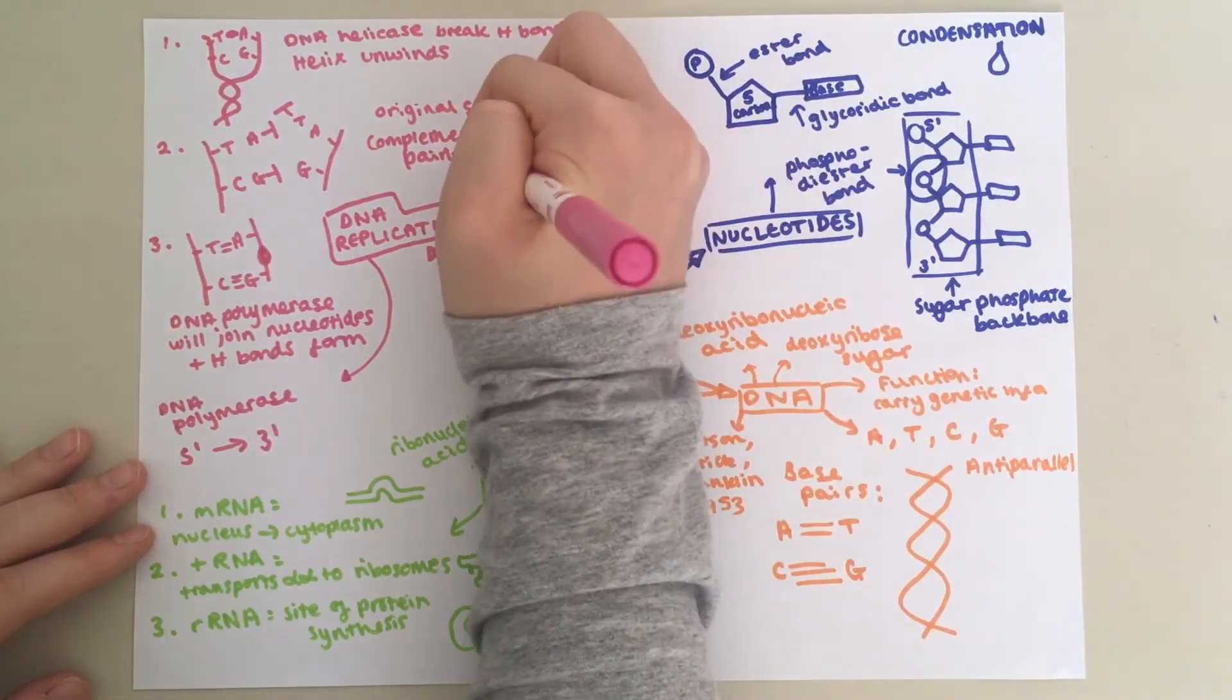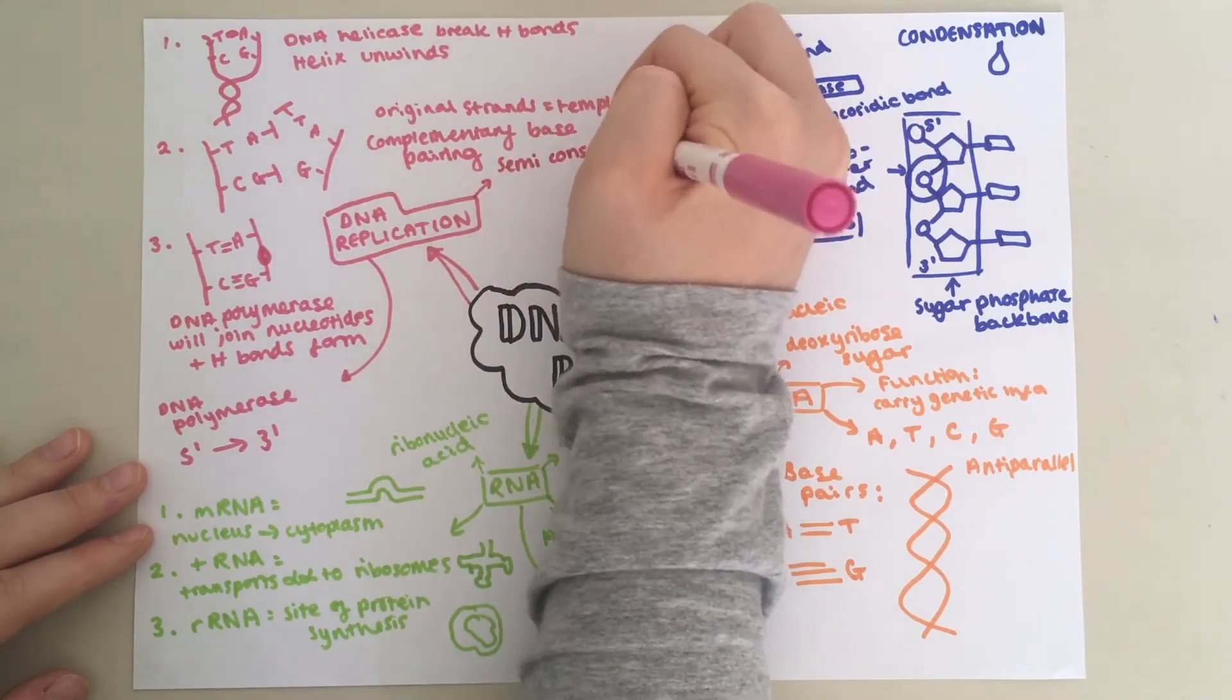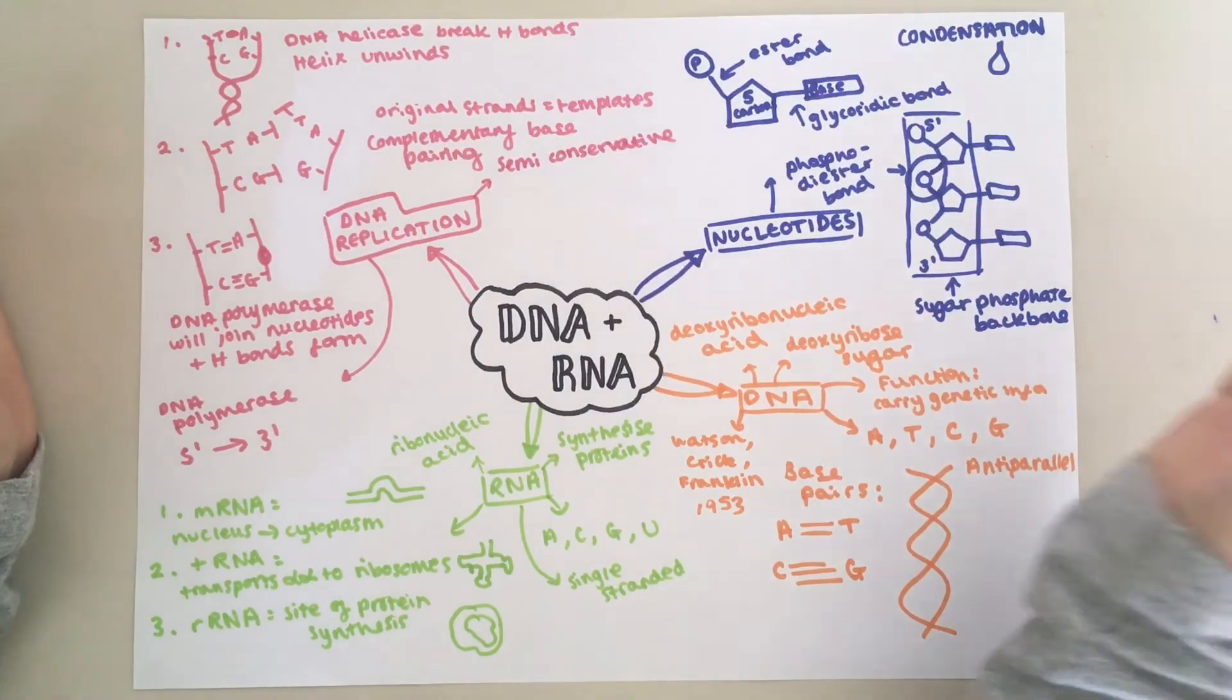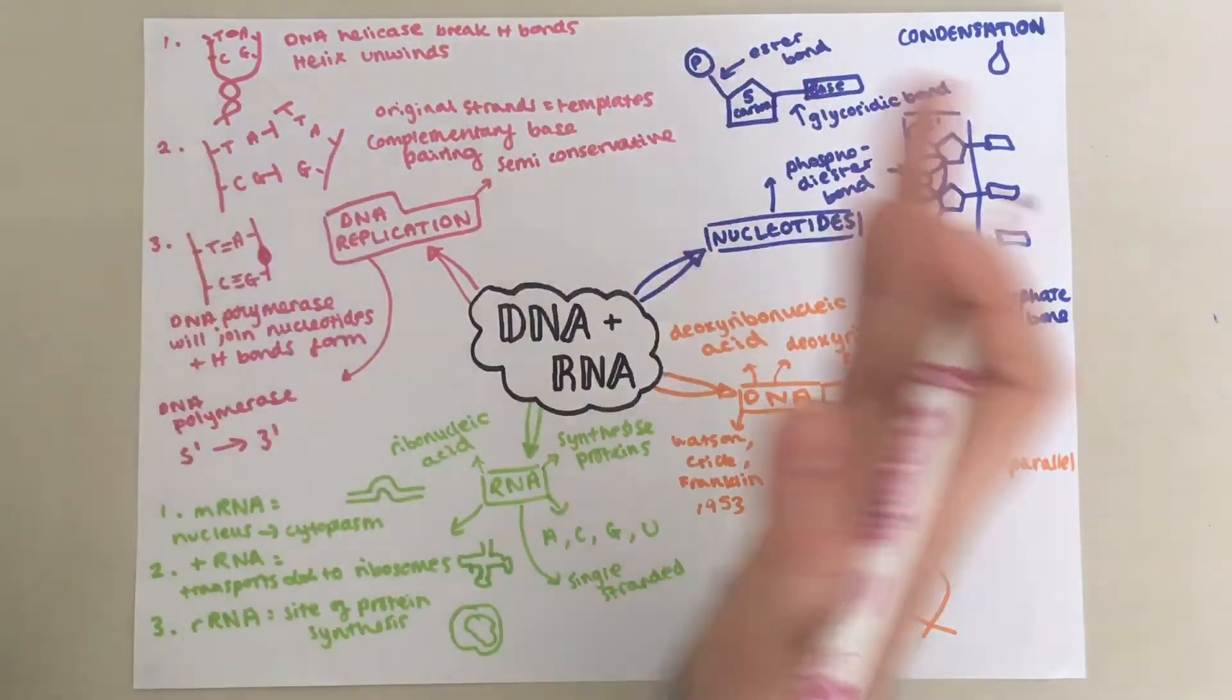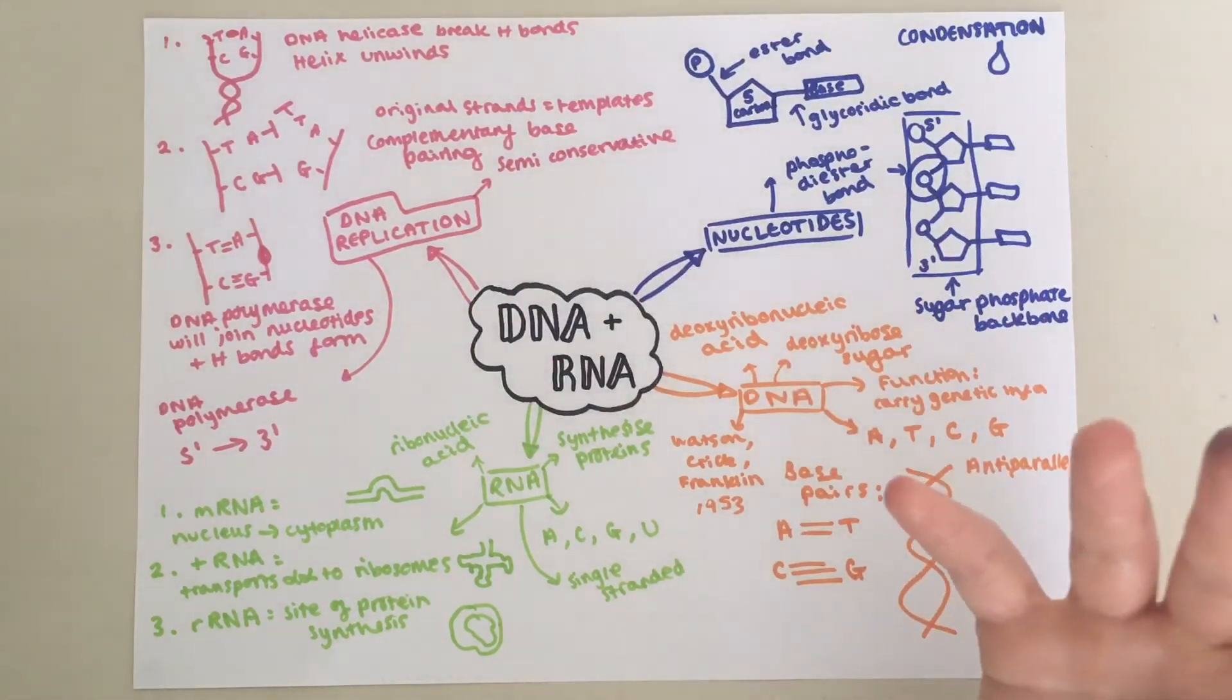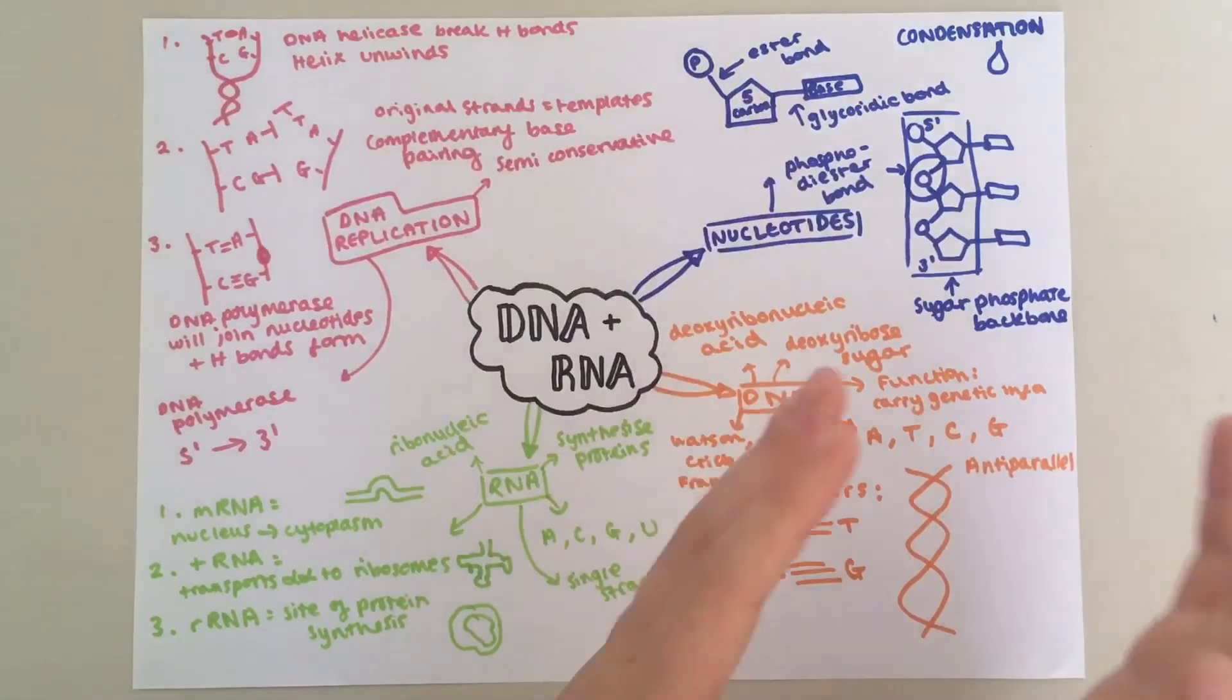Now, DNA replication is known as semi-conservative replication. This is basically because the two polynucleotide strands in DNA separate or they are unzipped for DNA replication to take place. Conservative replication would just be where the whole DNA helix is copied in one.